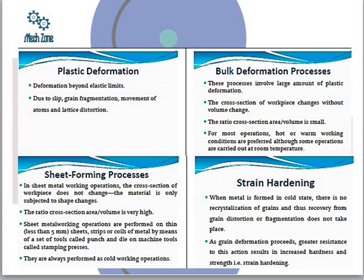Sheet forming is where the material is only subjected to shape changes. The ratio of cross-section area to volume is very high, because the area is much larger compared to the volume — thickness is reduced and area becomes much larger. So in sheet forming, the cross-section to volume ratio is high, whereas in bulk deformation it is low because bulk deformation occurs without volume change but with large area change.